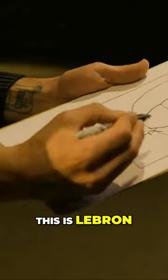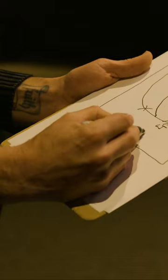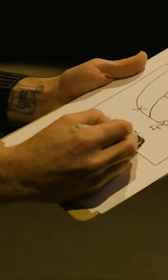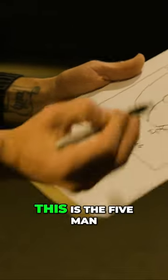Horns chest is a very simple play. So let's say this is LeBron, and this is D'Angelo right here, and this is the X5, this is the five man.